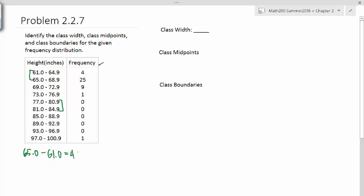65.0 minus 61.0, you'll get 4. Regardless of which two consecutive upper or lower class limits you choose, you should get the same result. Let's take this one, 84.9 minus 80.9. This is also 4. So your class width is going to be 4.